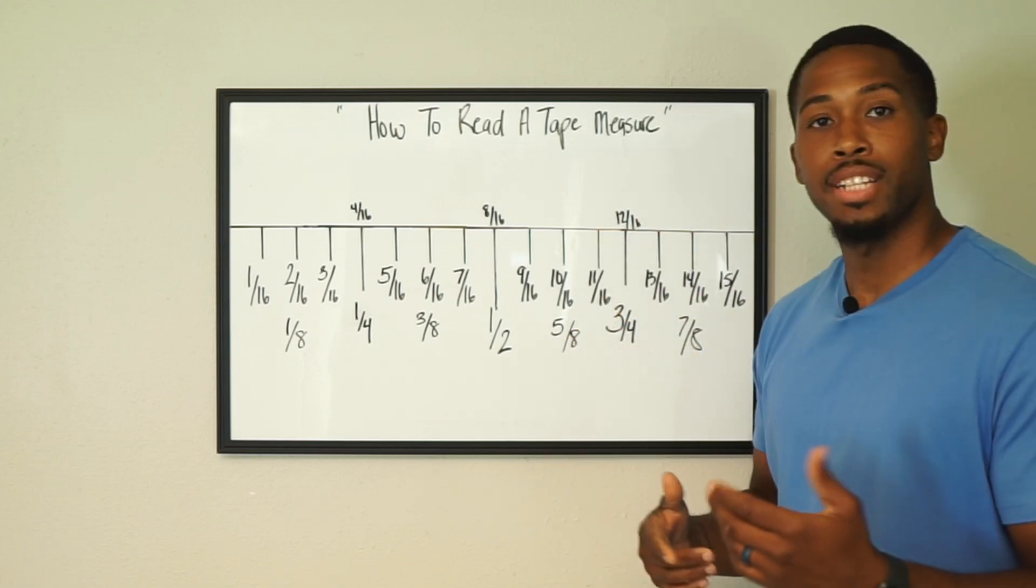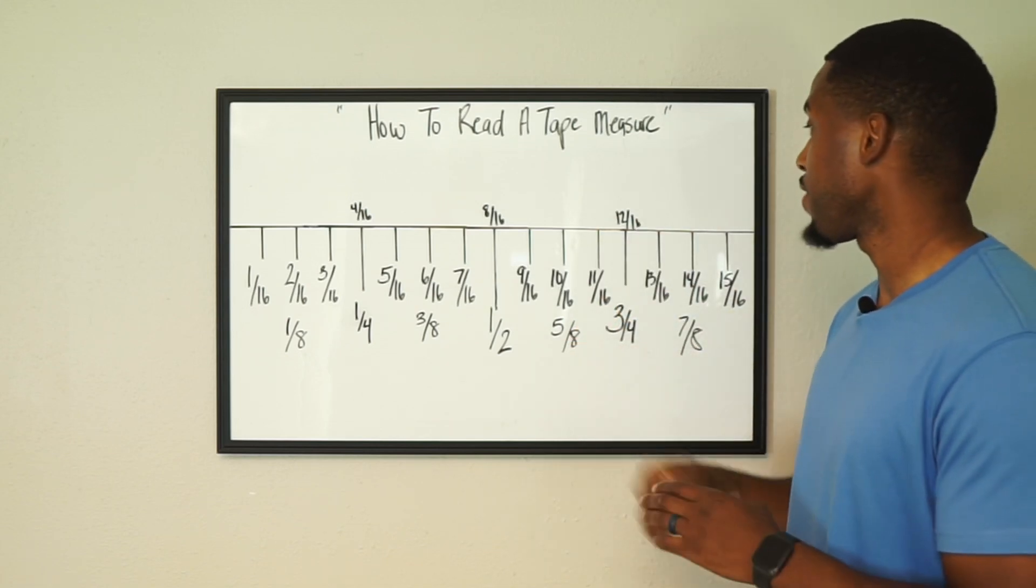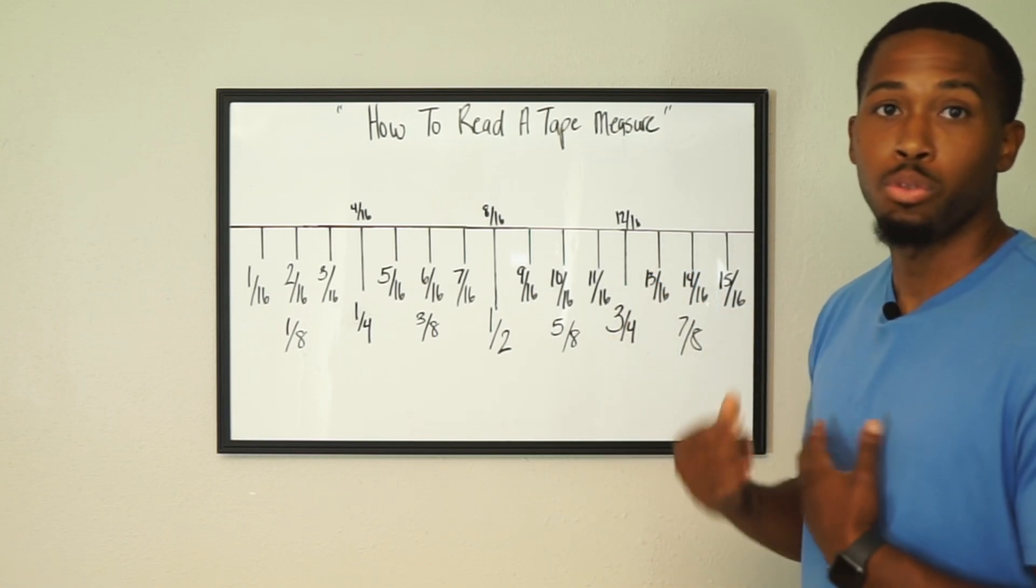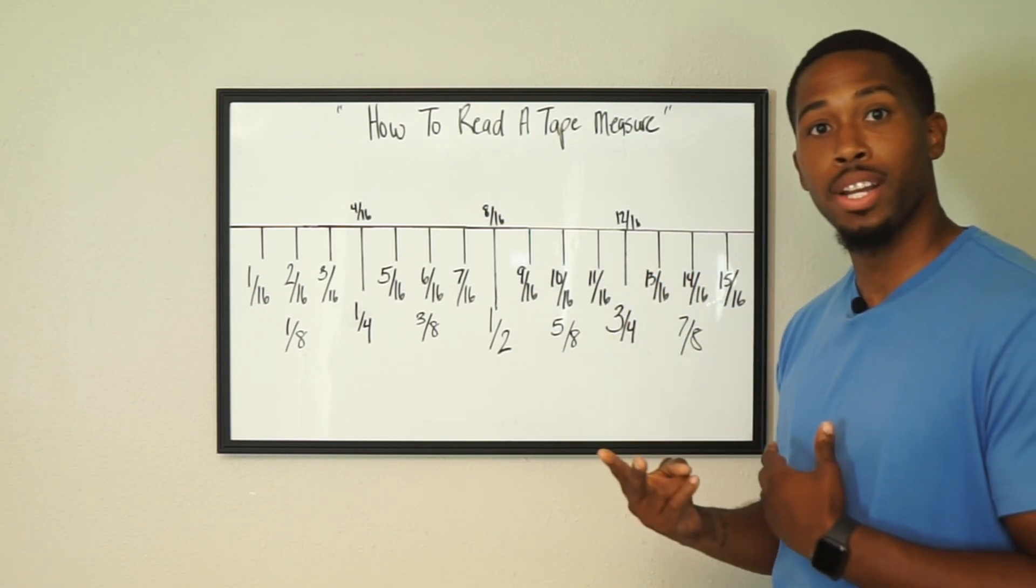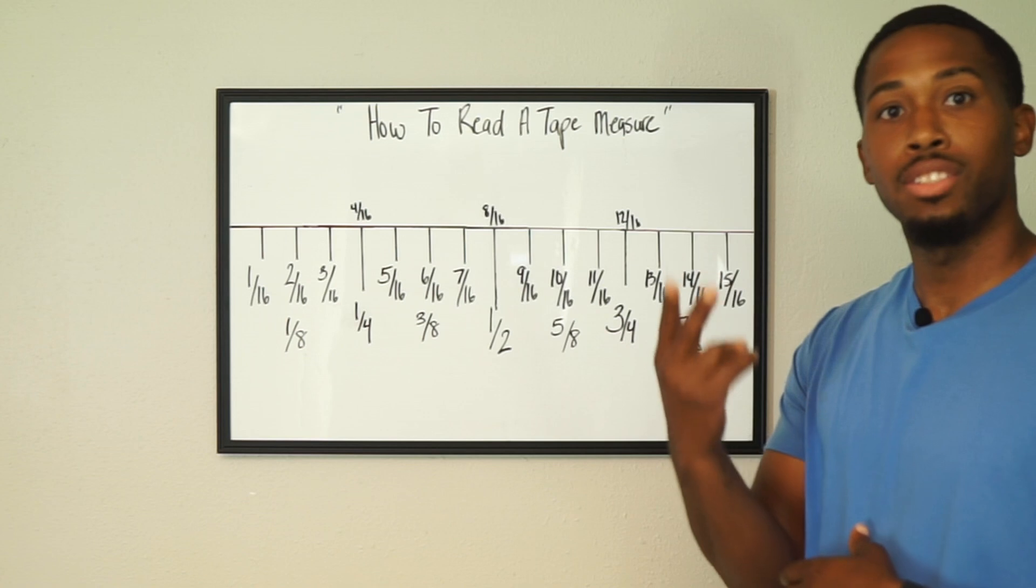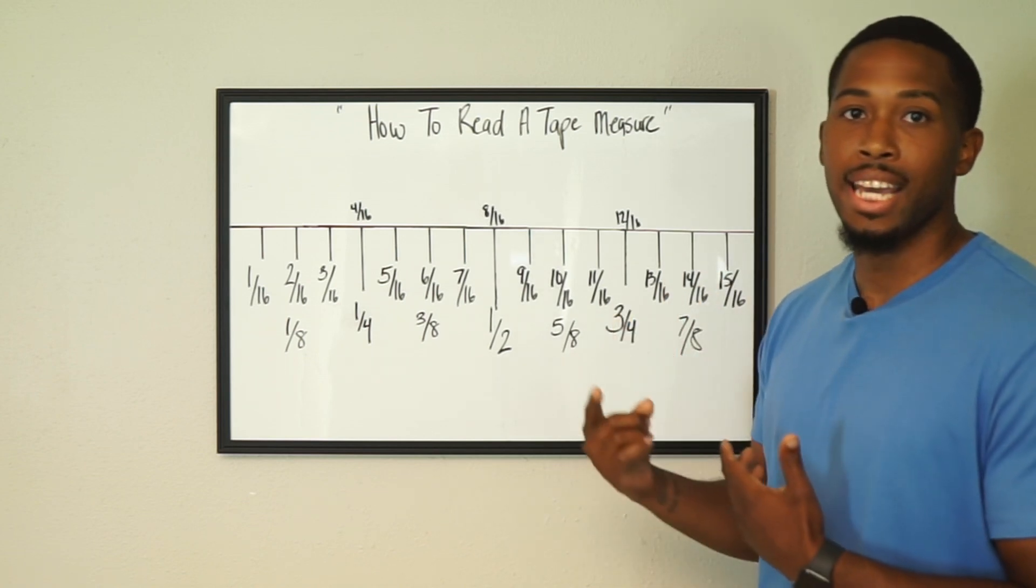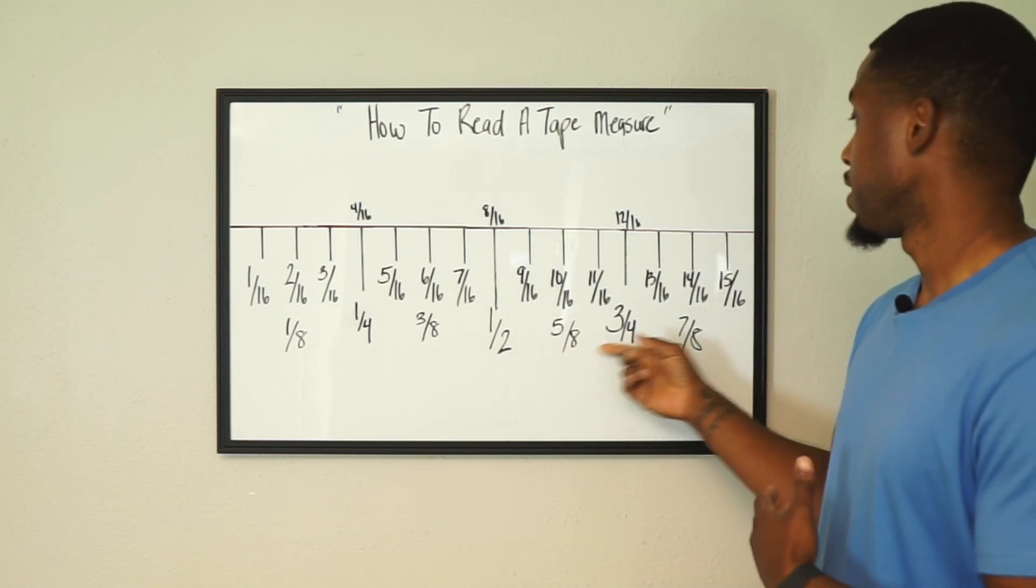Ten sixteenths, half of ten is five, half of sixteen is eight. That's how we get our five eighths. Twelve sixteenths, half of twelve is six, half of six is three. Now we're going to break down sixteen twice. Half of sixteen is eight, half of eight is four. That's how you get your three quarters.